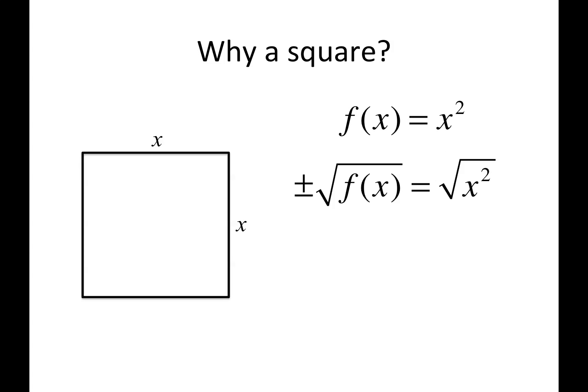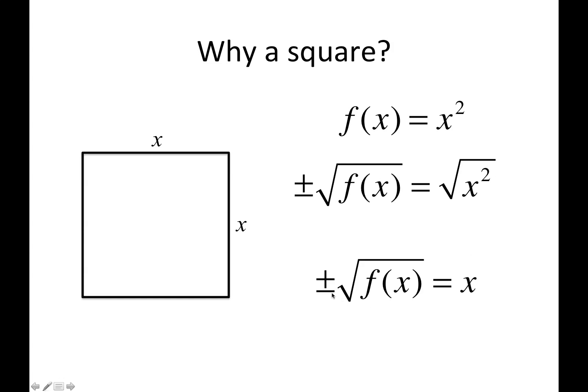So in this case, when we want to solve for x, I would take the square root of both sides. This cancels the square, and on the other side you'll have a plus or minus, because whatever answer you get, it can be positive or negative — a positive times a positive is positive, and a negative times a negative is also positive. This is why quadratic functions have two answers. So solving for x, you get ±√f(x).